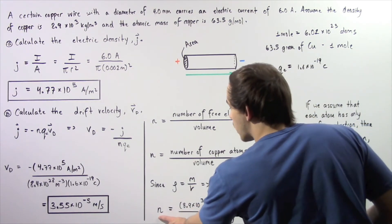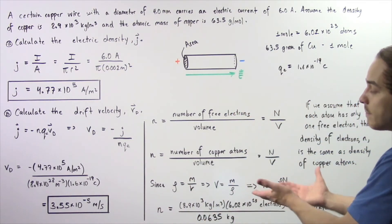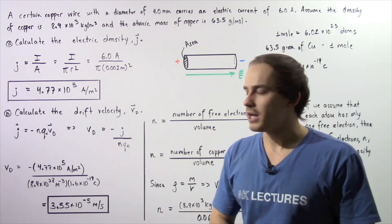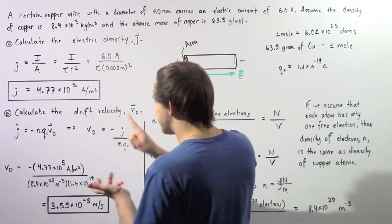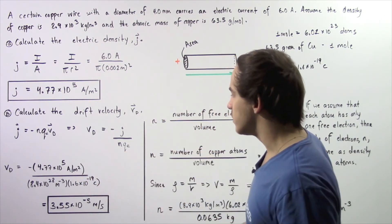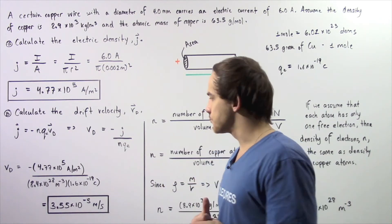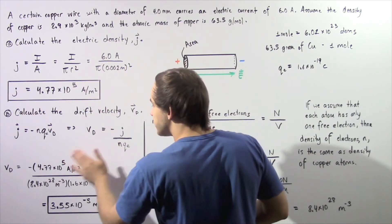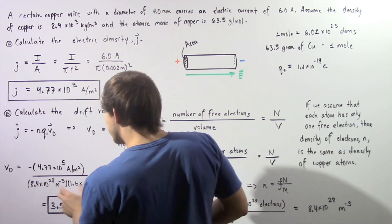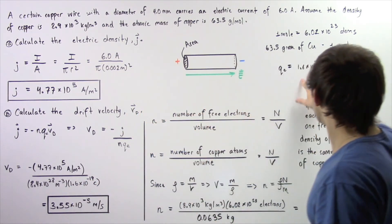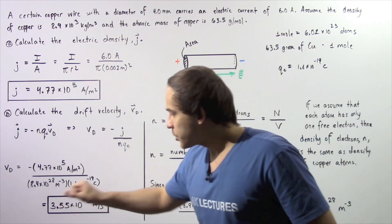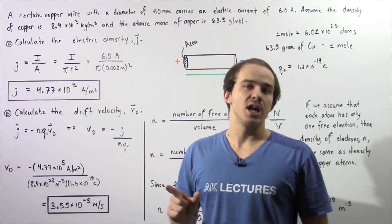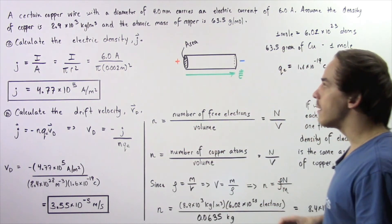This value is our electron density — and since each atom has one free electron by assumption, it is also our atom density. Now we know J from part A, the electron charge, and the electron density n. Plugging these into our drift velocity formula, we get 3.55 times 10 to the negative 5 meters per second as the drift velocity of electrons within our copper wire.